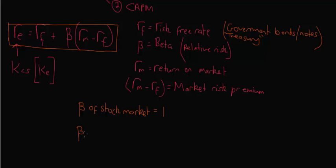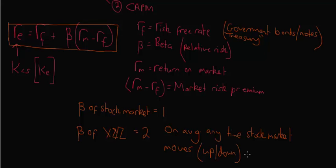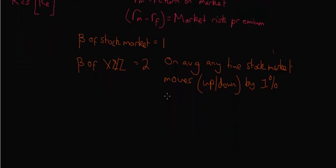But the idea of beta is that it's a relative risk to the stock market. The beta of the stock market is 1. Now if you find a beta of company XYZ, beta is 2, what that means is, on average, I've got to be really clear about this, on average, any time the stock market moves, and that means either up or down, by let's say 1%, company XYZ's stock moves twice as much, by 2%.